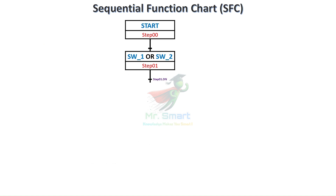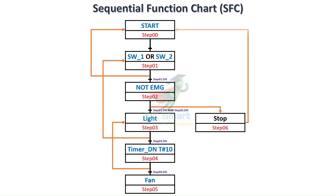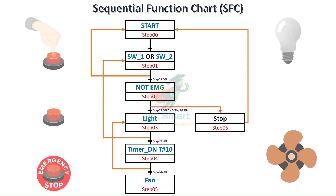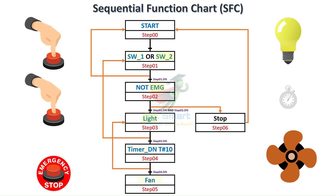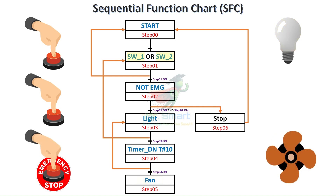Sequential function chart is like a flowchart for automation. It breaks down processes into individual steps, with transitions defining when to move to the next step. This makes it ideal for sequential tasks like manufacturing processes with multiple stages. It's perfect for applications requiring precise task management and timing, like robotics or batch processing.